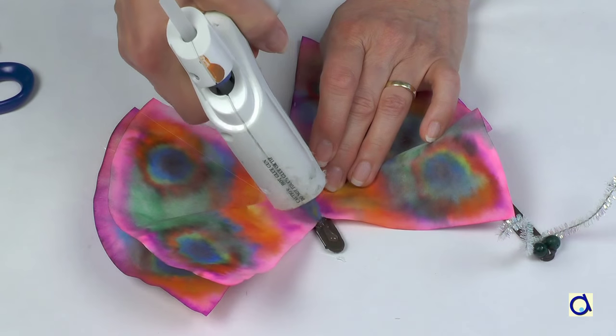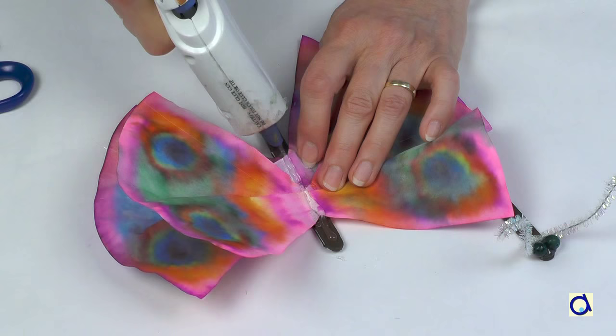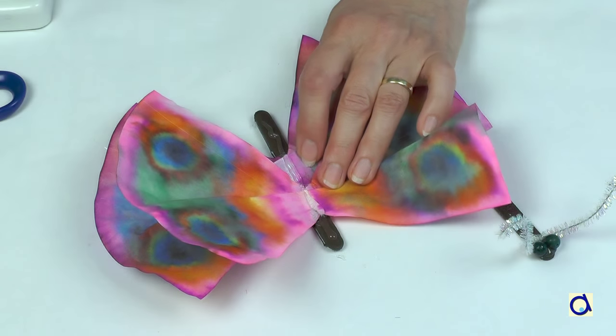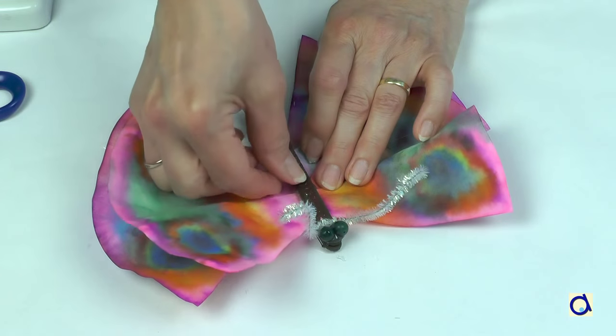Then, put glue on top of the wings and glue the other popsicle stick with the eyes. The wings should be placed closer to the eyes.